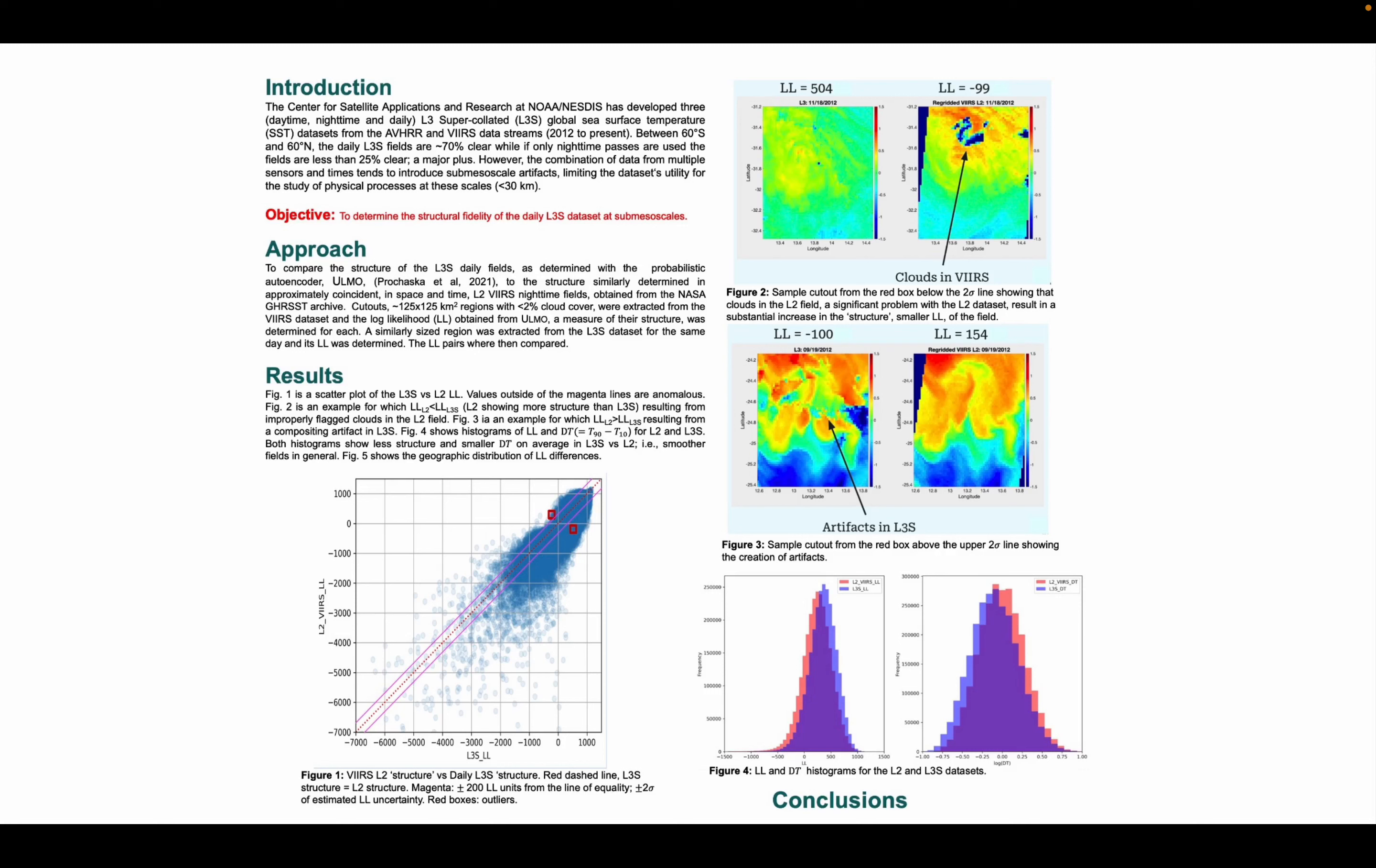For the results, as we see in Figure 1, when directly comparing the log-likelihood values of the Level 2 and Level 3 super-collated cutouts, cutouts outside of these airlines represent the anomalies. The cutouts mostly follow a linear pattern of matched log-likelihoods, but on the right we see some examples of cases where the cutouts are outside of the airlines.